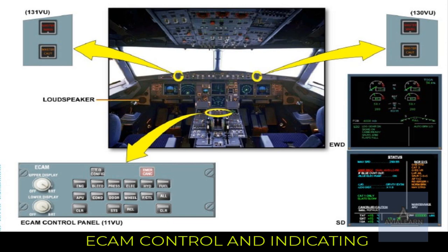When things are not normal, the status page displays operational data on the left-hand side and an inoperative system on the right-hand side. In front of each pilot, there are two attention-getters: a red master warning and an amber master caution. As a further means of getting attention, there is a loudspeaker on each side of the cockpit for oral alerts and synthetic voice messages.